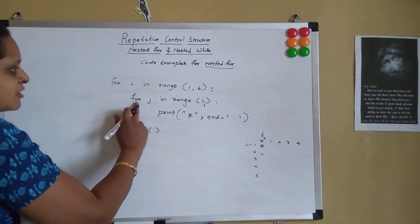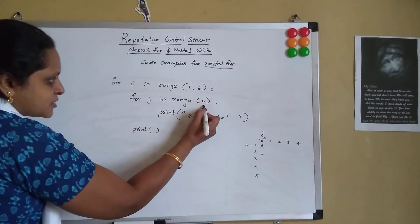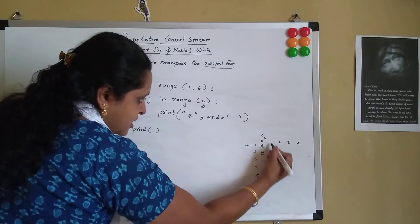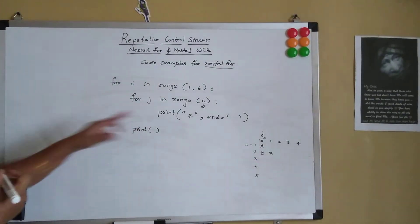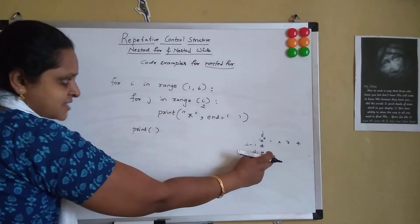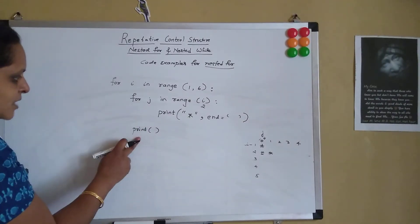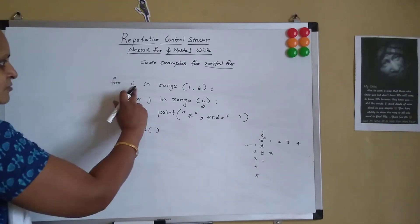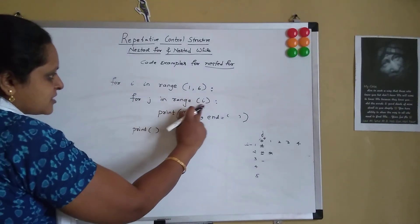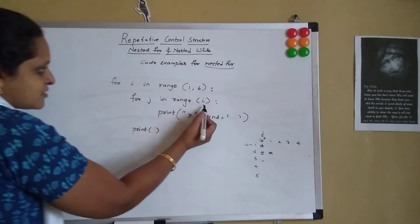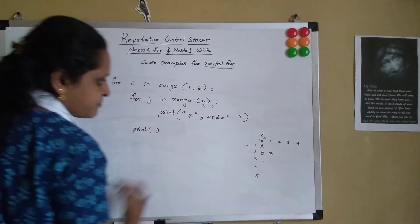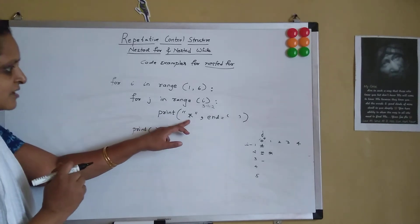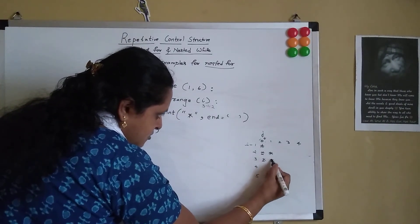It will perform the outer loop and increment i to 2. So i becomes 2. For j in range(2) — 2 minus 1 is 1, so it will print 2 stars: one for the 0th value and one for the 1st value, with a space between them via end=' '. Now the j loop has ended, so it comes to the print statement and the cursor moves to the third line. Now i is 3, so j ranges from 0 to 2, and it will print the asterisk 3 times.